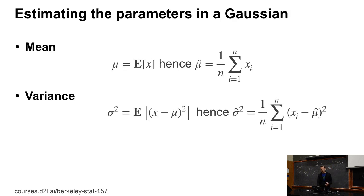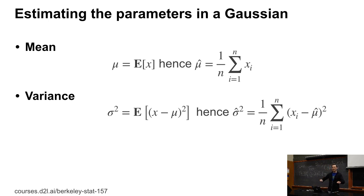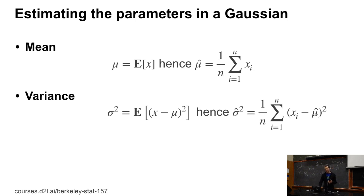Everybody knows that if you want to get the mean, you take all the numbers, sum them up, and divide by n. Even an elementary school kid might already know about averages — like dividing cake fairly. They probably don't know about variance, but a good variance estimate is (1/n) · Σ(xi − μ̂)².